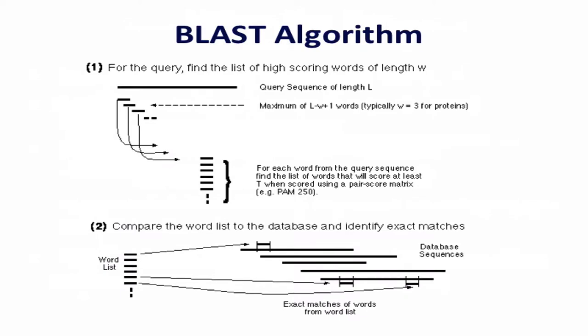For the query, you find a list of words of length W. You first break the query into all its constituent words, and then for each word you allow for certain mismatches that are themselves quite similar using a scoring table like the PAM or BLOSUM table. So only words that are sufficiently similar — with a high BLOSUM score between amino acids — will be allowed. For a DNA-to-DNA match, you'd allow say one mismatch in an 11-base DNA word.